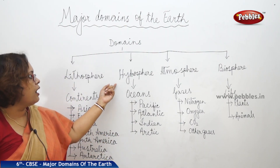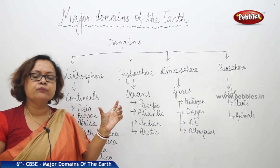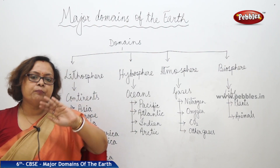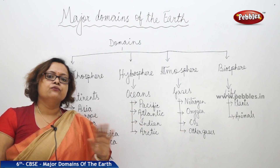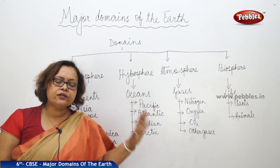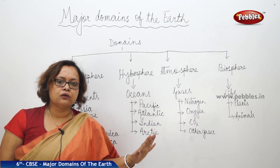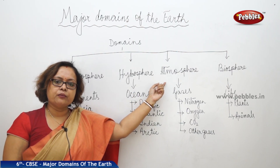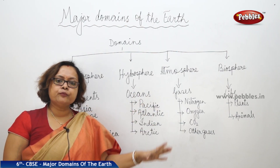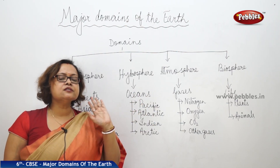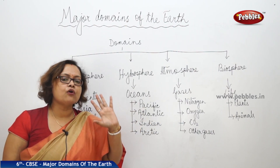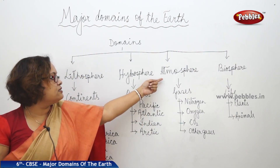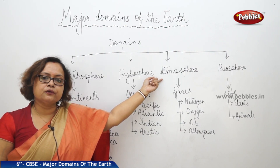Next, hydrosphere. Hydro means water, so the watery part of the earth is known as the hydrosphere. Then we come to atmosphere — the gaseous part of the earth that covers all of us, which we can feel, is known as the atmosphere.